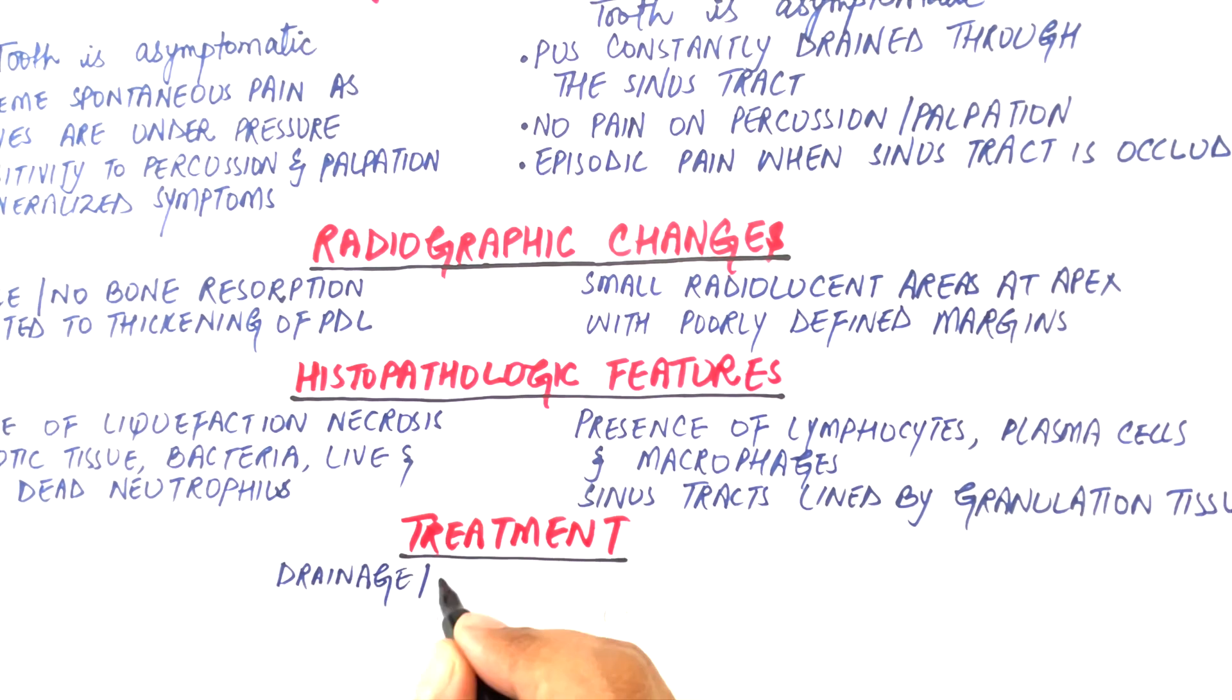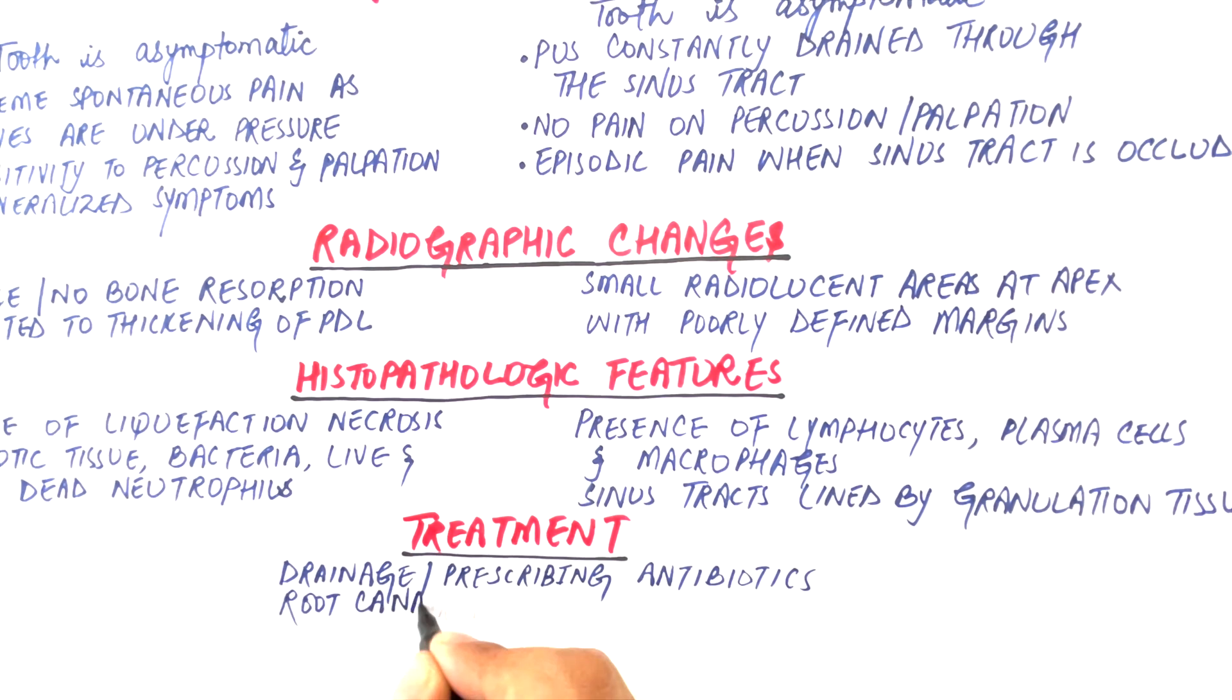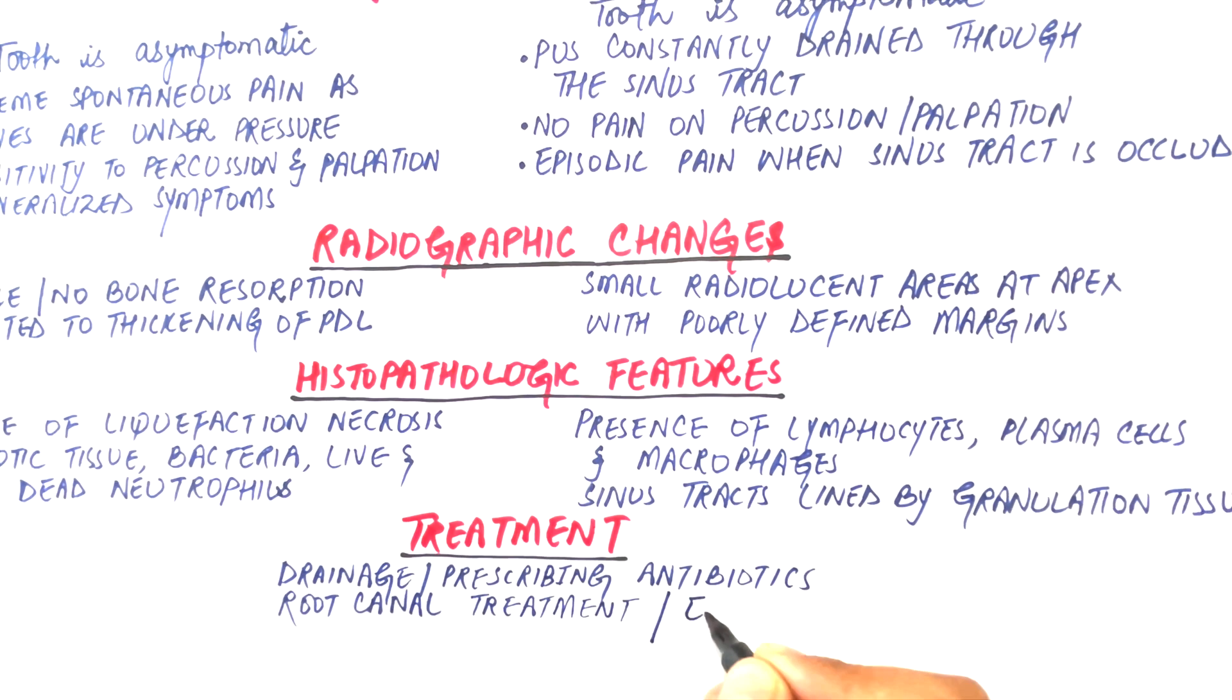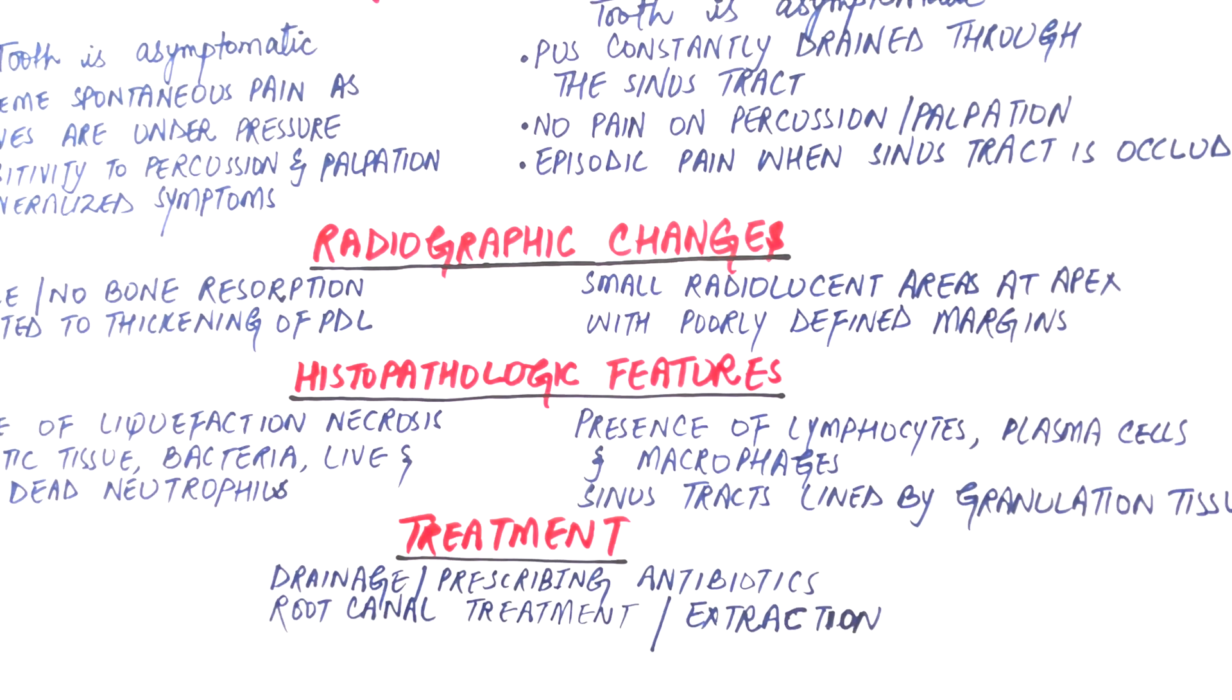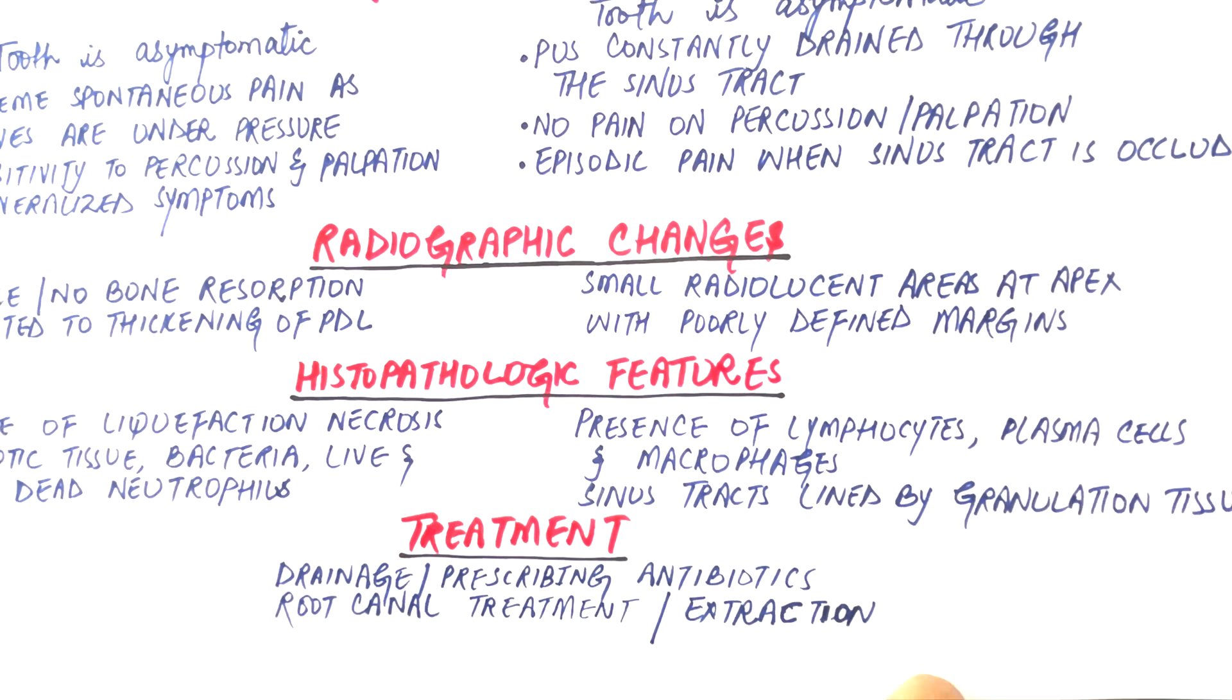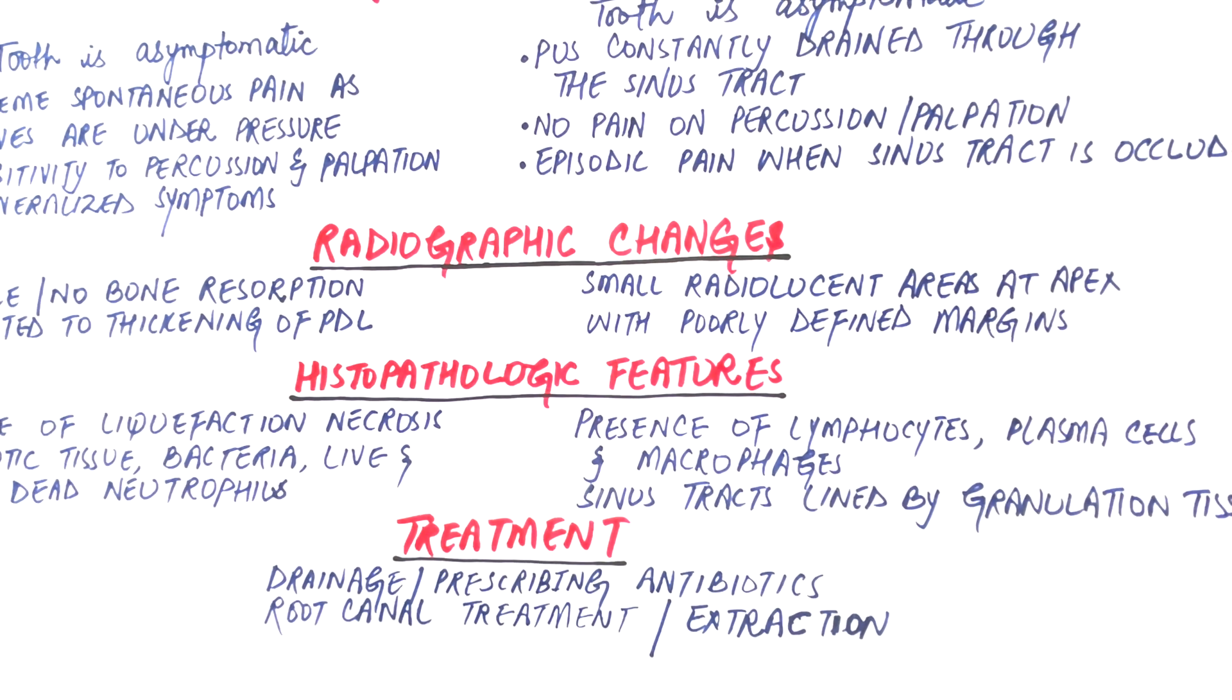Both acute and chronic periapical abscess are treated by drainage of the abscess. Antibiotics are also administered against the offending microorganisms, and the affected tooth is treated either by root canal treatment or by extraction if there isn't adequate tooth structure left. In cases of chronic abscess, excavation of the sinus tracts might also be required.